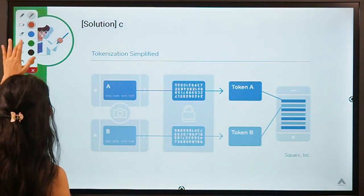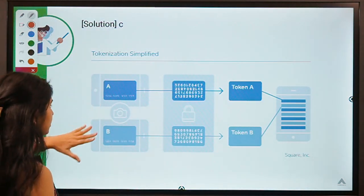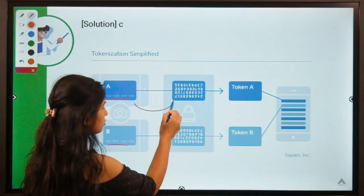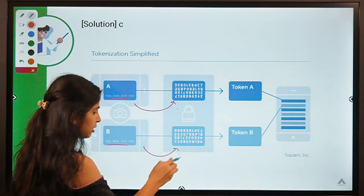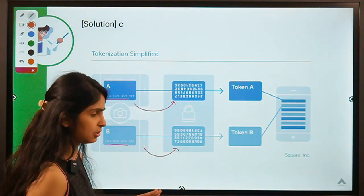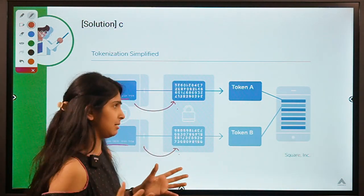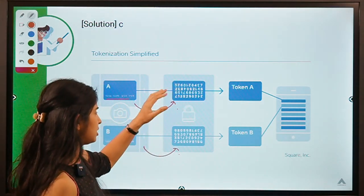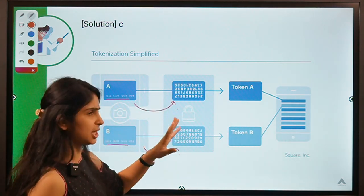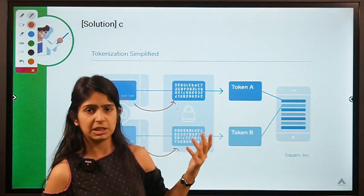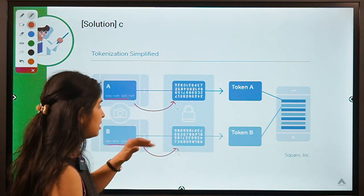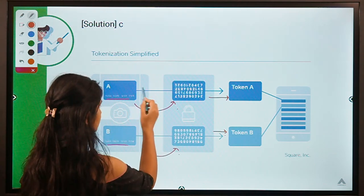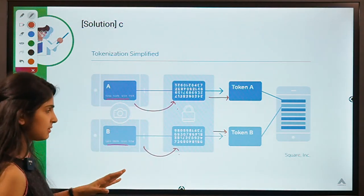Visually, two cards with a sixteen-digit card number are shown being converted into symbols or a string of letters. The digits are written in altered forms — for example, '2' written upside down, '7' written upside down — so this would not make any sense to a third party. They are converted into Token A and Token B using such symbols.